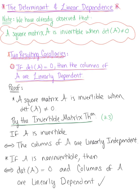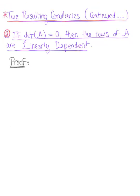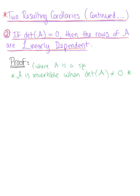We're now ready to verify the second corollary. Our second corollary is that if the determinant of A is equal to 0, then the rows of matrix A are linearly dependent. We want to start by keeping in mind that A is invertible when the determinant of A is not equal to 0, and this is where A is square.